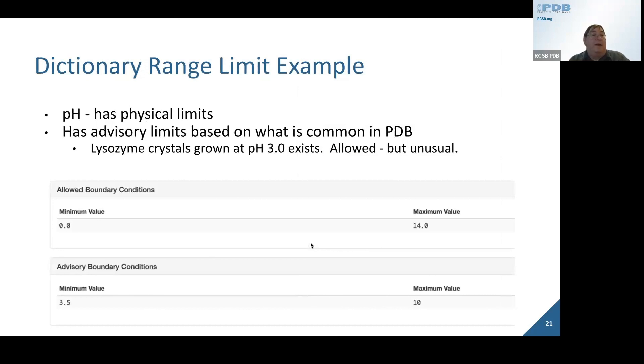Here's an example of a dictionary for pH of crystallization conditions. Inside this dictionary, we have what we call allowed ranges. For pH, you expect most biological samples to be from 0 to 14—you will not see anything in our archive that violates that. However, we also provide advisory boundary conditions. Statistical analysis of all the structures deposited into the protein data bank showed that crystallization conditions tended to have a pH between 3.5 and 10. There are examples in the archive of lysozyme crystals grown at pH 3.0. They're allowed, but they're unusual.